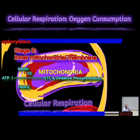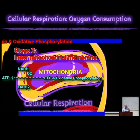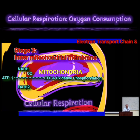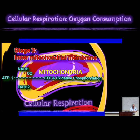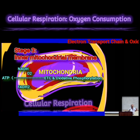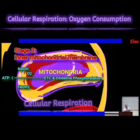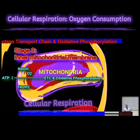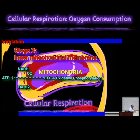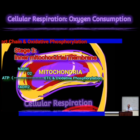Let's continue where we left off with the electron transport chain and oxidative phosphorylation. This is not a metabolic pathway per se — you want to think of it as a process. What is the function of that process? If you don't know the answer to that, there's no point in knowing any of the details.